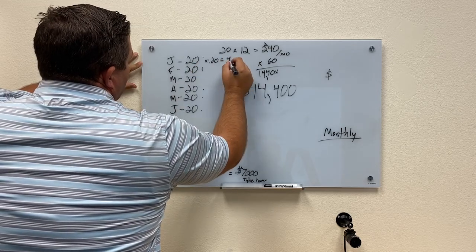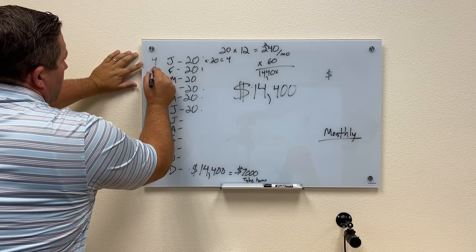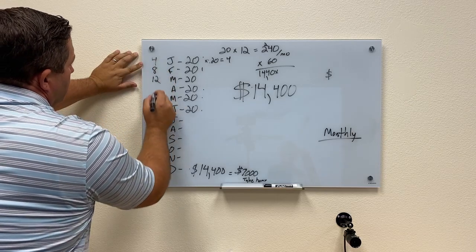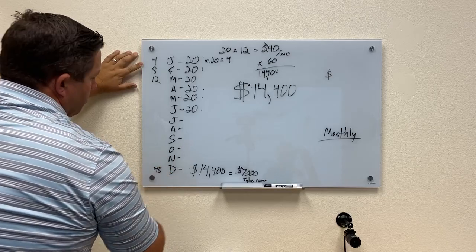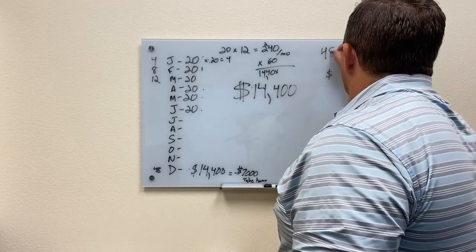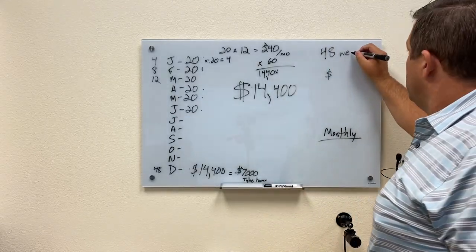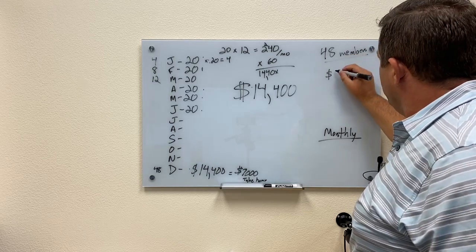If I multiply this by 20%, that means we get 4 members per month. So in January we have 4, 8, 12, 12 times 4 would mean here we have 48 members.